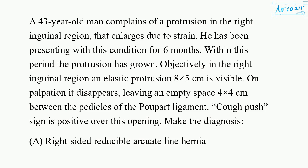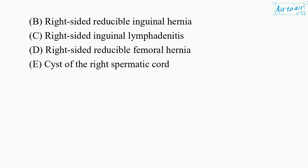A. Right-sided reducible arcuate line hernia. B. Right-sided reducible inguinal hernia. C. Right-sided inguinal lymphadenitis. D. Right-sided reducible femoral hernia. E. Cyst of the right spermatic cord.